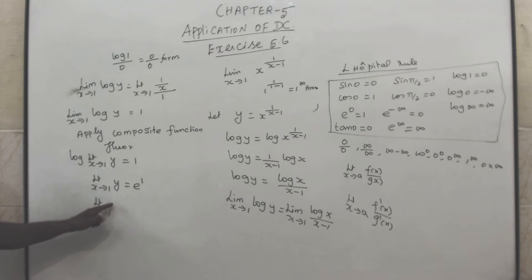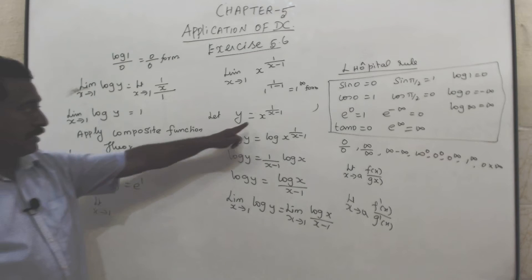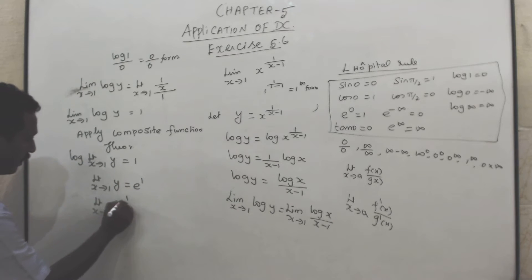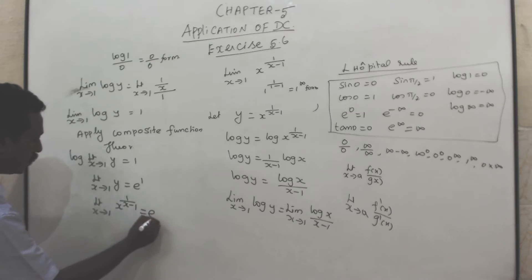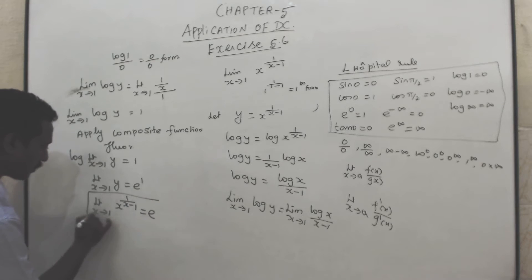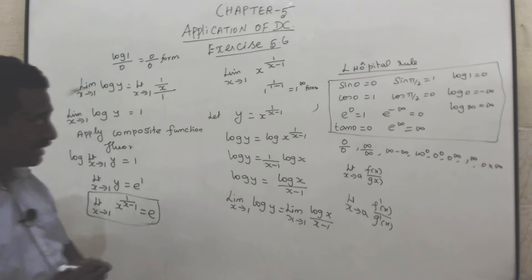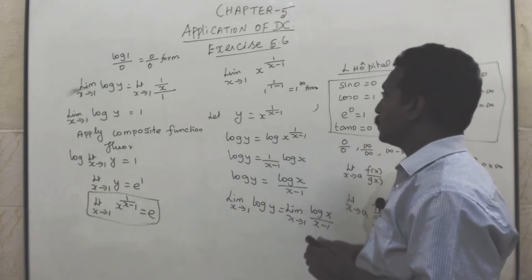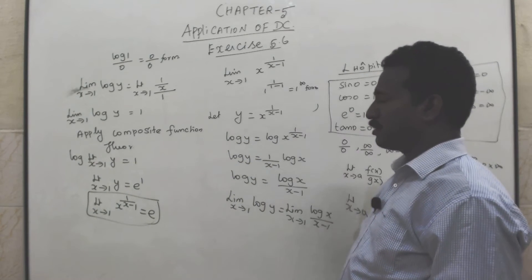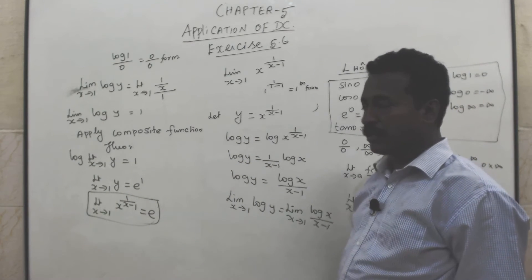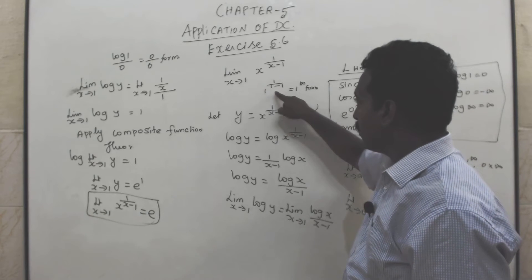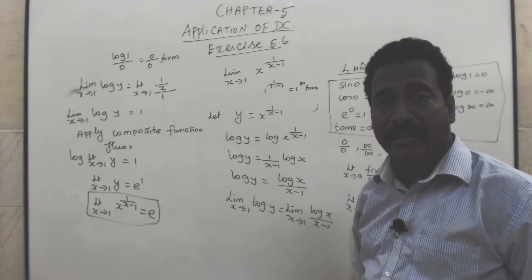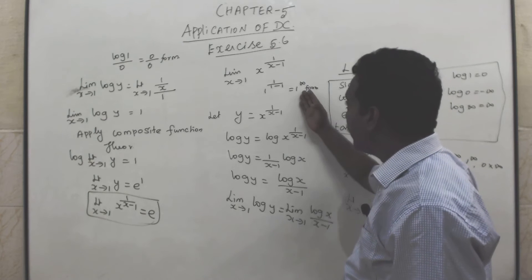Here y is equal to x power 1 by x minus 1. So limit x tends to 1 of x^(1/(x-1)) equals e power 1 by x minus 1. When x is 1, 1 minus 1 is 0, and any number divided by 0 is infinity.